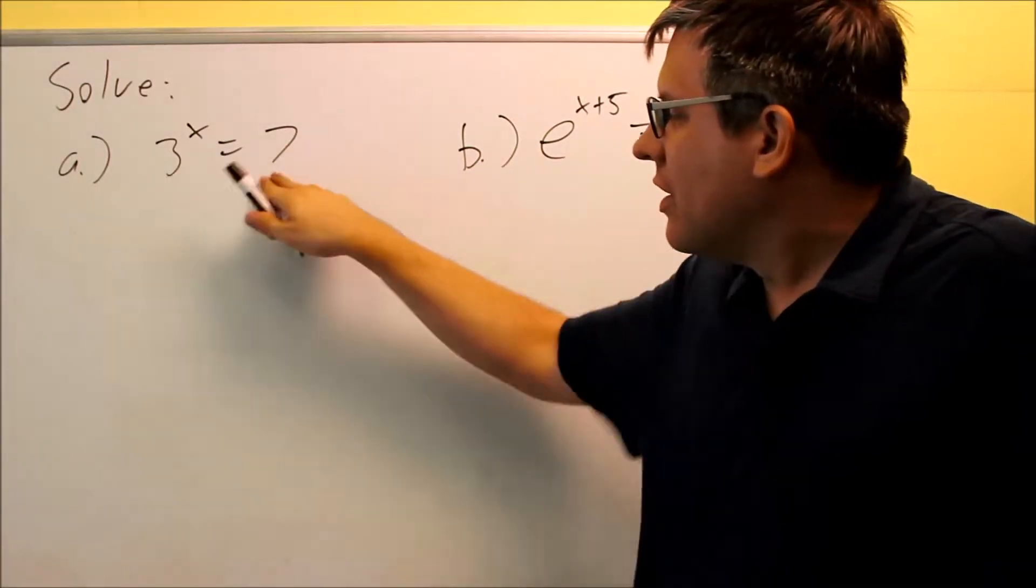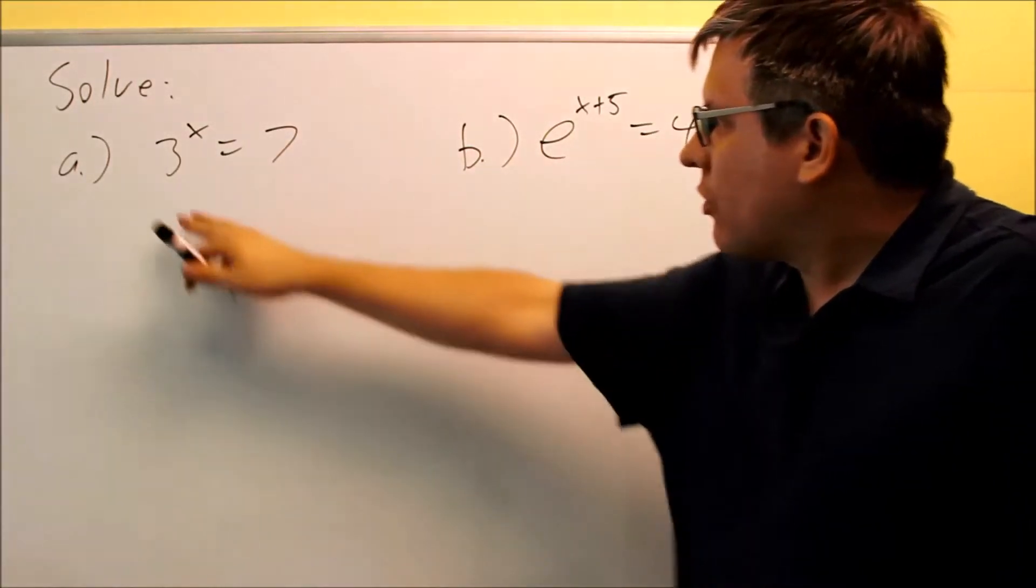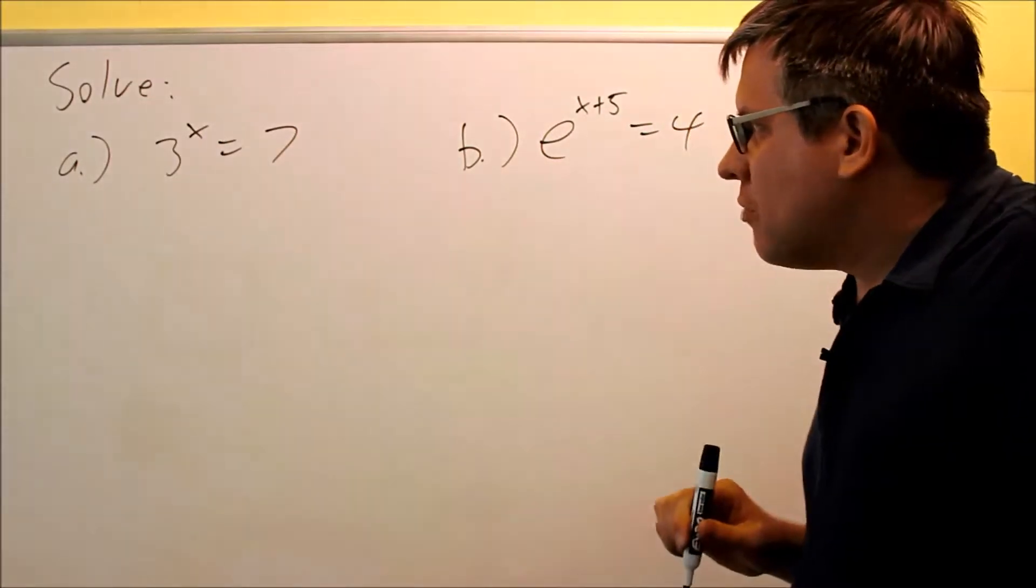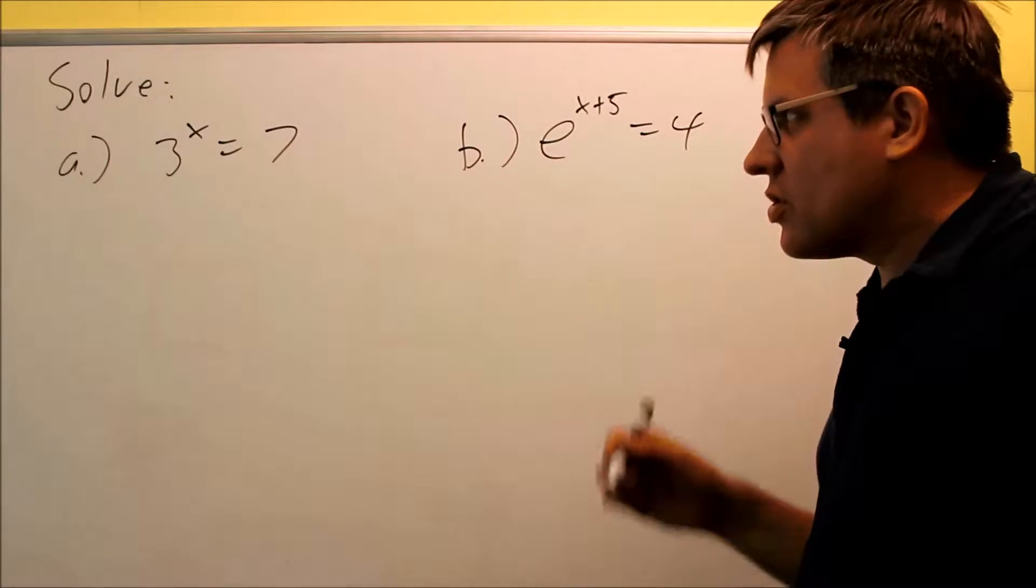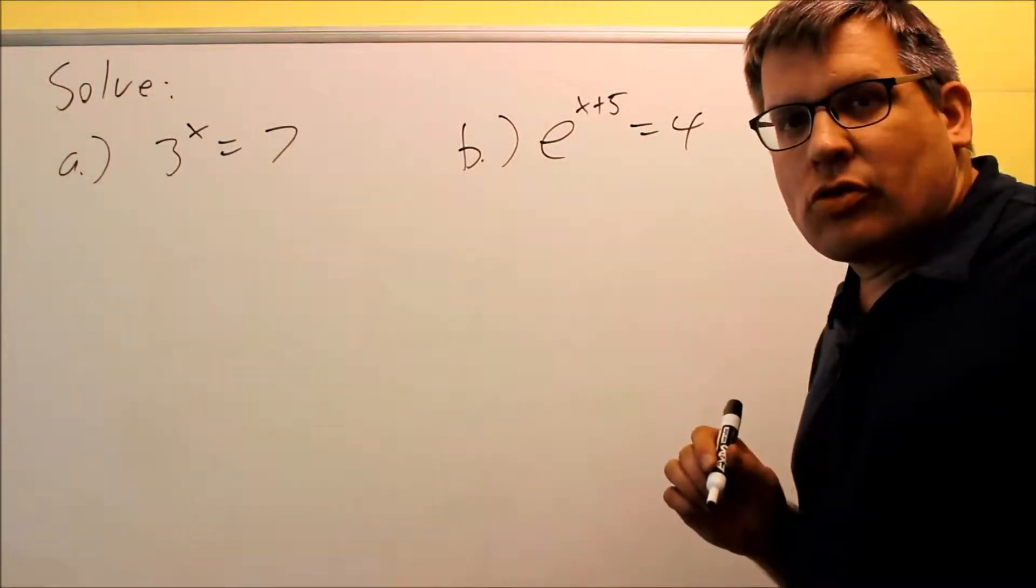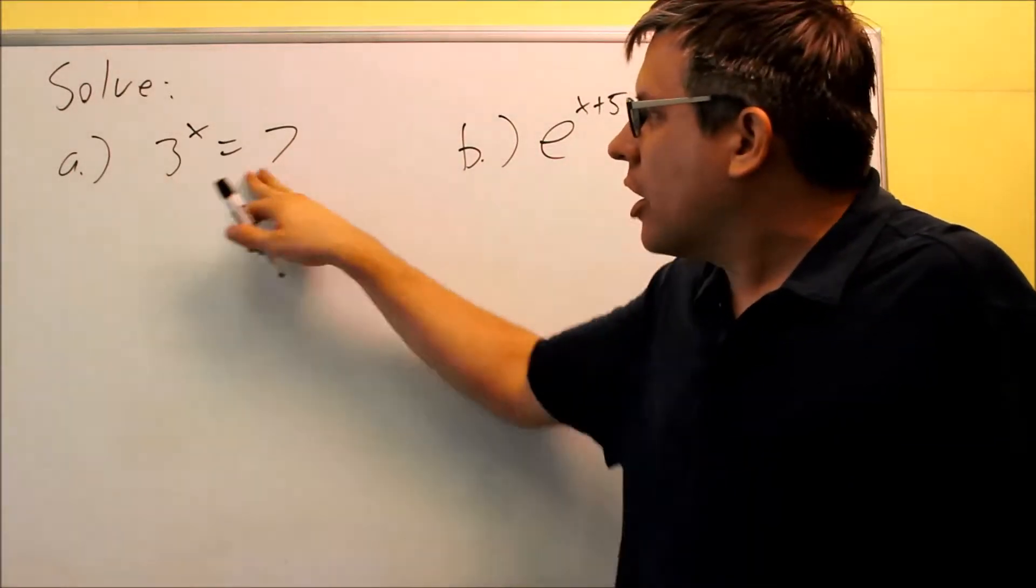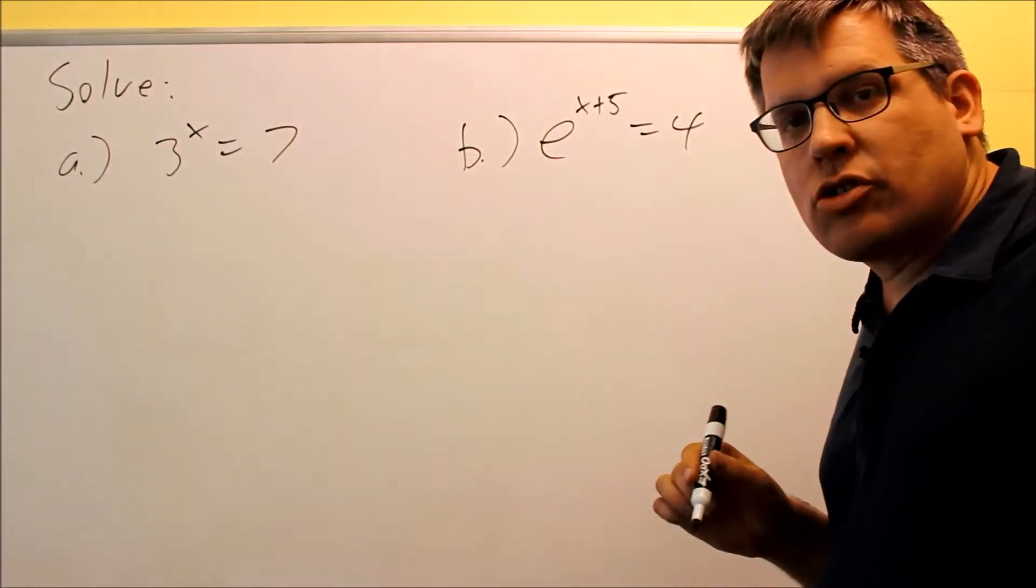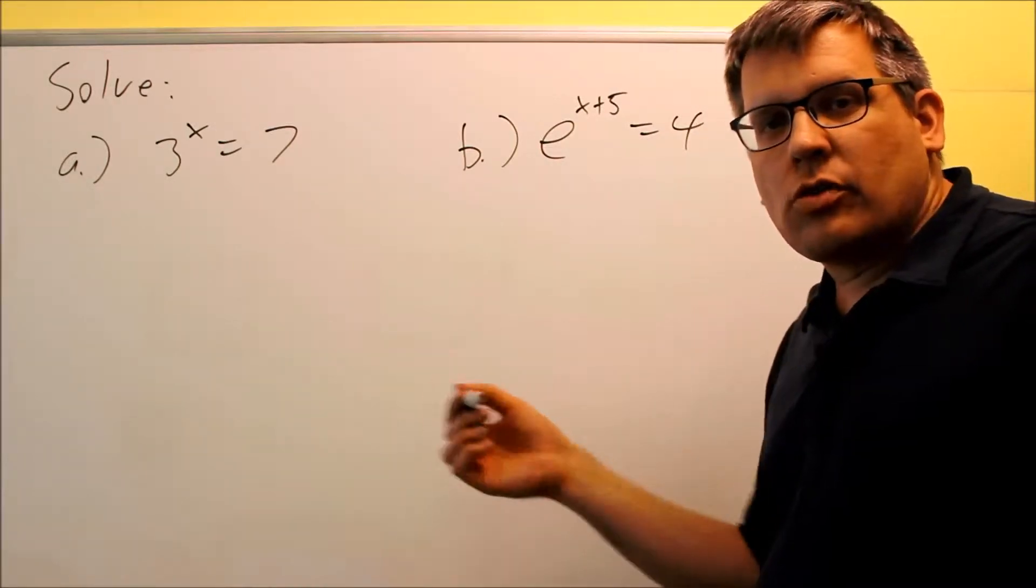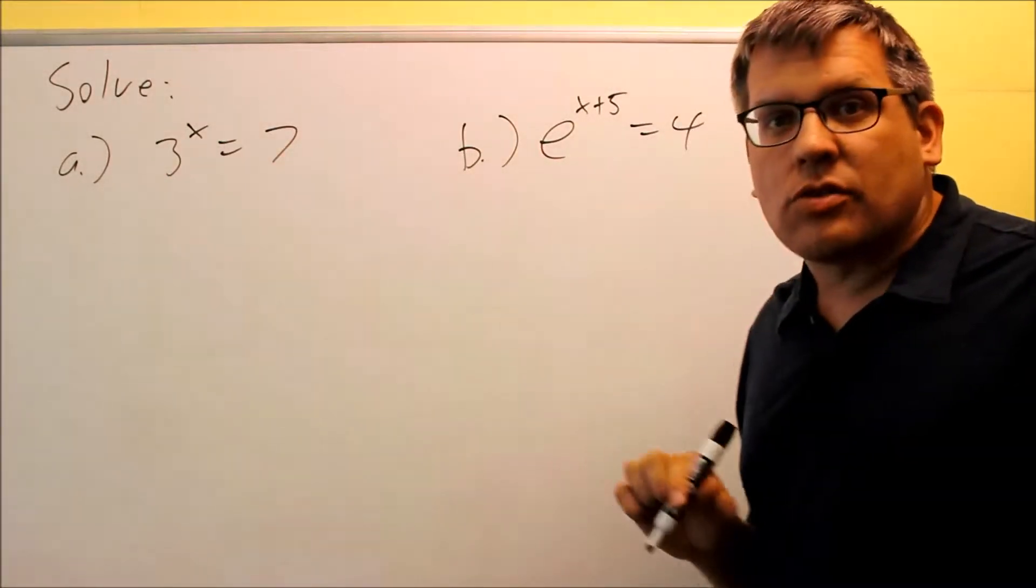The problem with this one is these are not the same bases. We have a 3 and a 7, and you can't write these both as the same base. So we need to apply a different process. That process involves putting either a log on both sides or ln. You can choose either log base 10 or ln, and you could actually use log of any base that you wanted to,